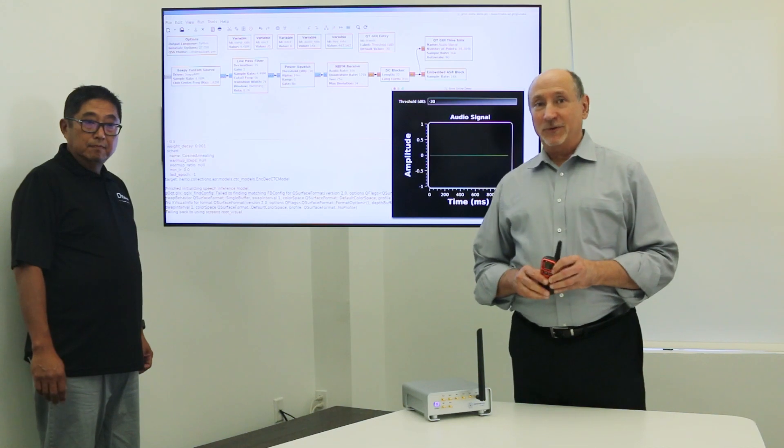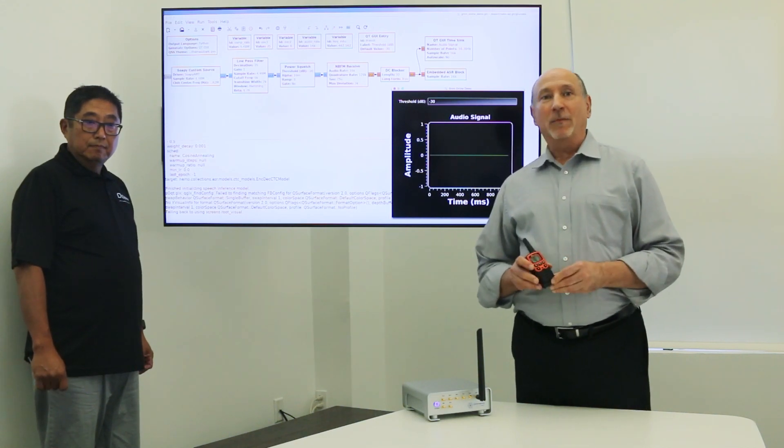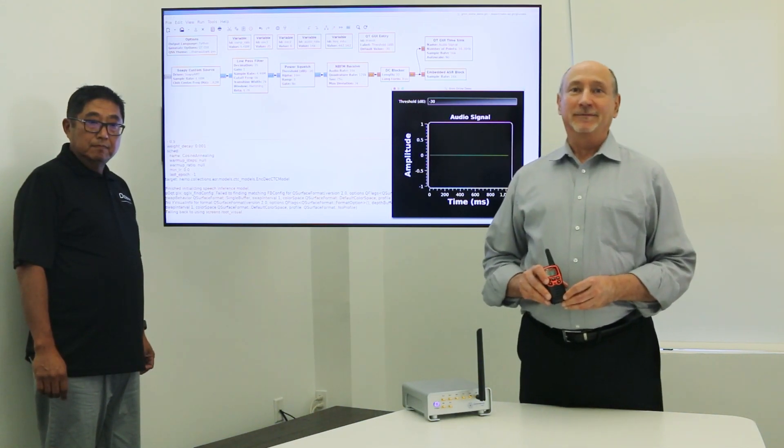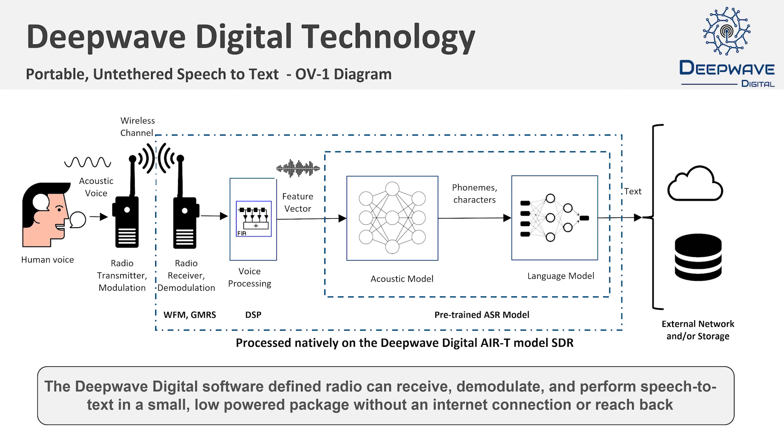But before we do a demonstration, we'd like to explain a little bit more about how this technology is put together. The Deep Wave Automatic Speech Recognition System, or ASR: a remote speaker is communicating over radio in a wireless channel using a known modulation scheme, in this case using the General Mobile Radio Service narrowband FM system.